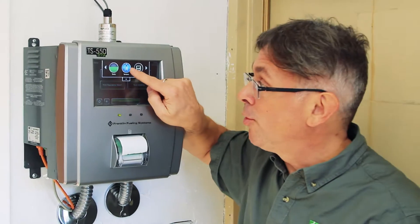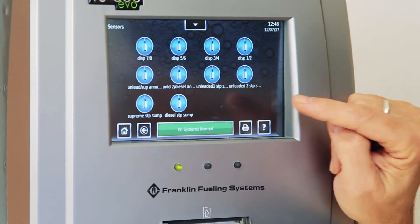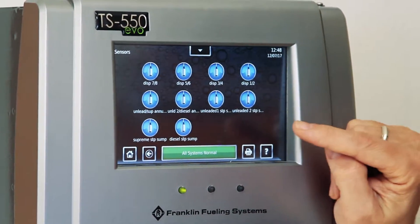Click on the button, Sensors, and we have sensors located under the dispenser pans, on the tank top turbine sump, and the interstitial monitoring of the double wall tanks.